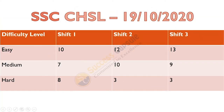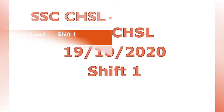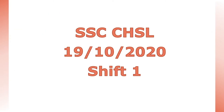Ab agar hum difficulty level ki baat karein toh easy questions 10, 12 aur 13 pooche gaye hain. Medium level ke 7, 10 aur 9 hain. Lekin Shift 1 mein zyada hard questions the — 8 questions — aur Shift 2 aur 3 mein comparative teen-teen hard questions hain. Sabse pehle hum 19th October ki date ki discussion kar rahe hain, toh uska Shift 1 discuss karenge.